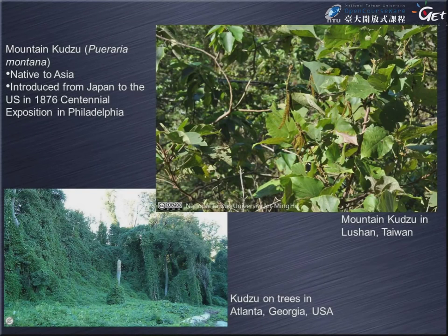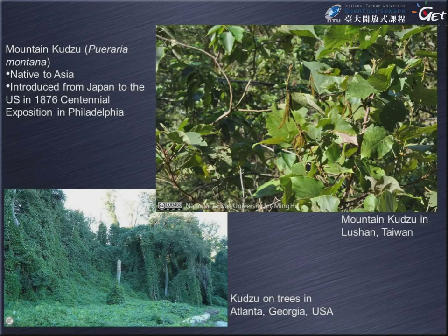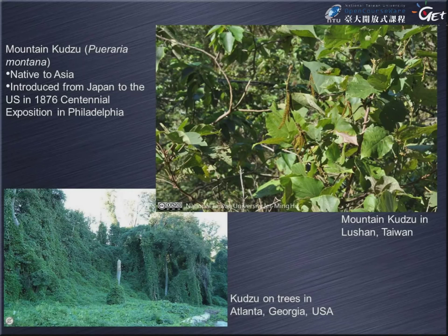Here I give you some examples of native and also invasive species. On the right of the slide is the mountain kudzu in Taiwan. This unique plant is a legume and is native to East Asia, from Japan to Southeast Asia. The scientific name is Pueraria montana. A very closely related species, Pueraria lobata, is the kudzu. As some of you from America may be aware, the kudzu plant is currently a big problem there.